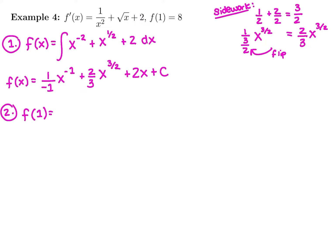So first of all, I have 1 divided by negative 1, which is going to be negative 1. And then we have x is 1 to the negative 1, plus 2 thirds, and then we have x is 1 to the 3 halves, plus 2 times 1, plus c has to equal 8.